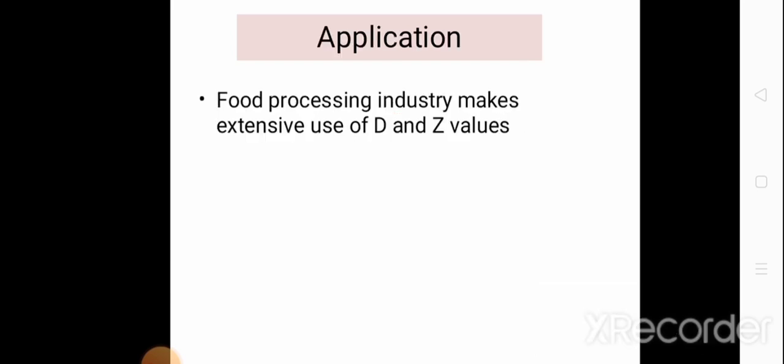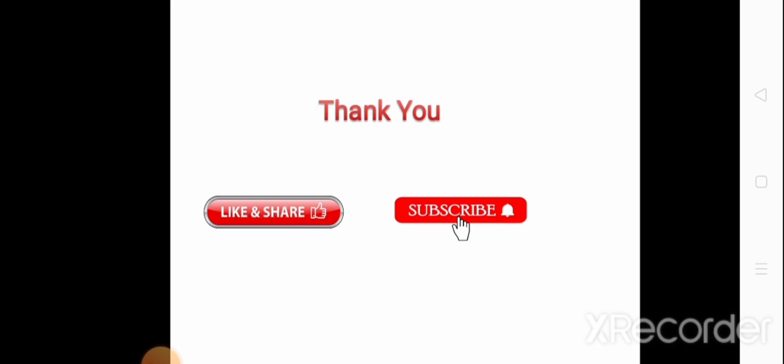Finally, the application of D and Z values: these are extensively used in the food processing industry to destroy spores and microorganisms and increase the shelf life of food. For more videos, please like, share, and subscribe to this channel. Thank you.